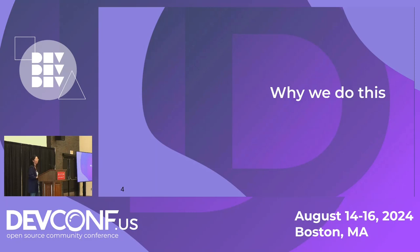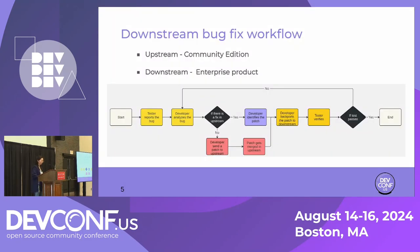First, why do we do this? I'd like to introduce the downstream bug fix workflow. To clarify, in the following slides, upstream refers to the community edition of the project and downstream refers to the enterprise product.